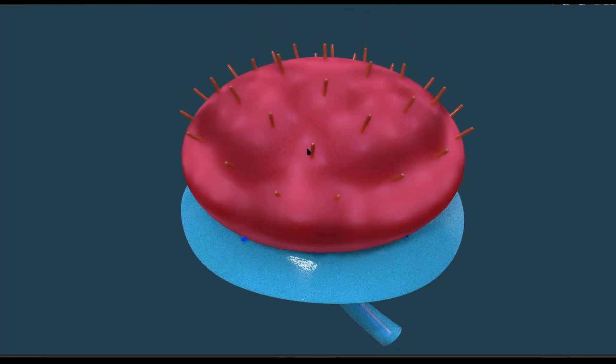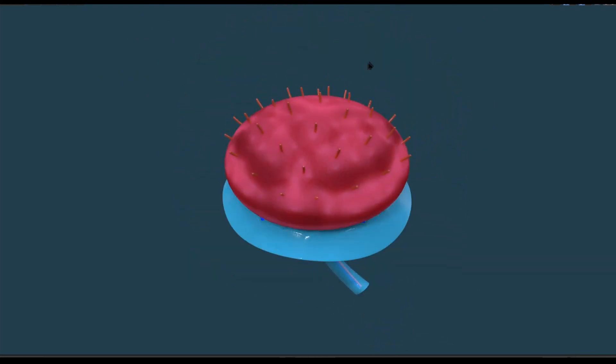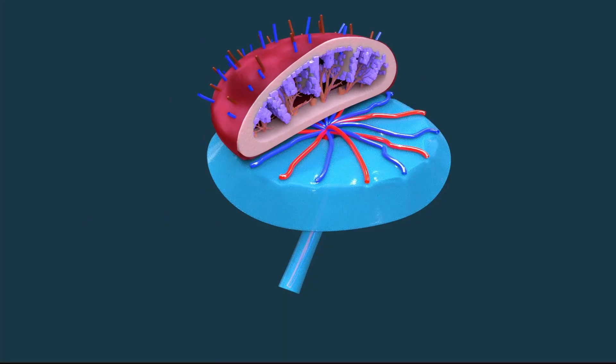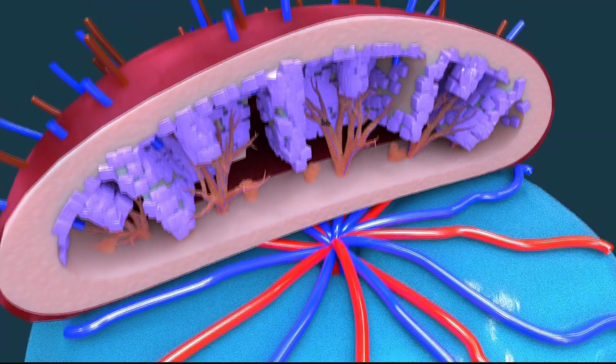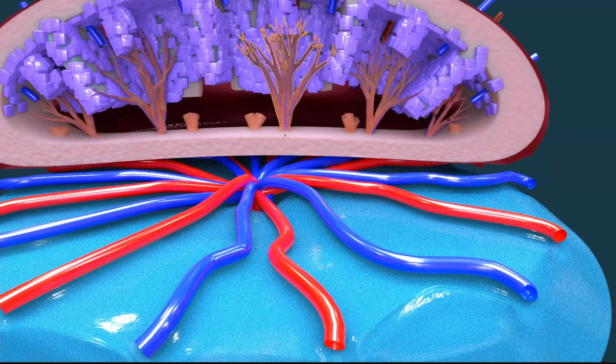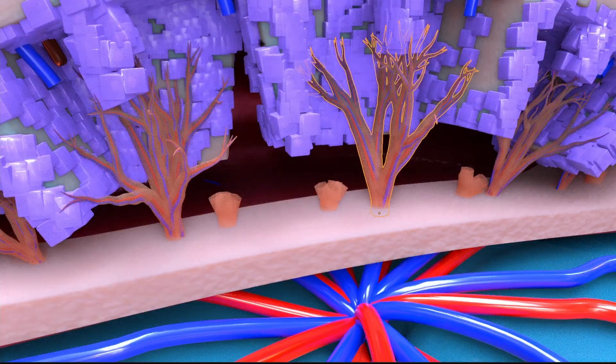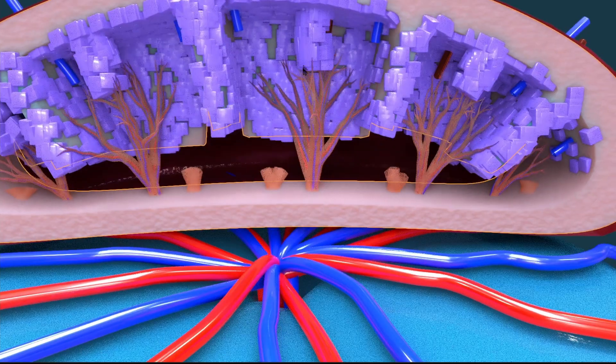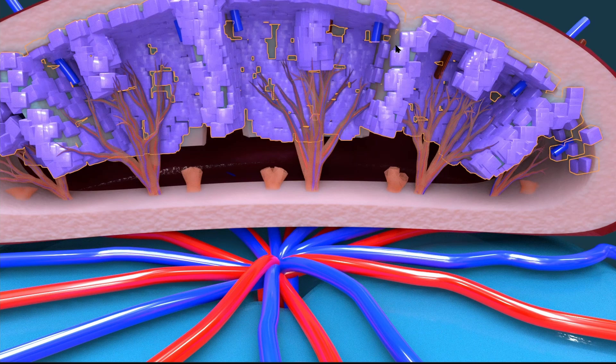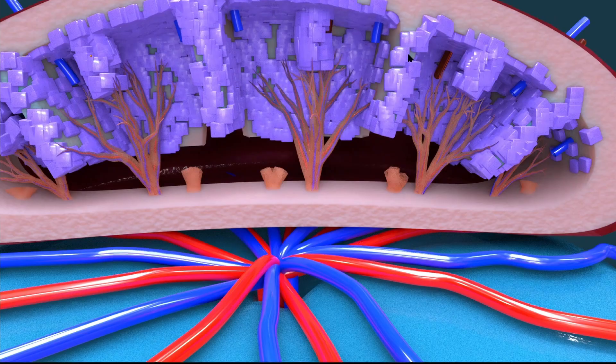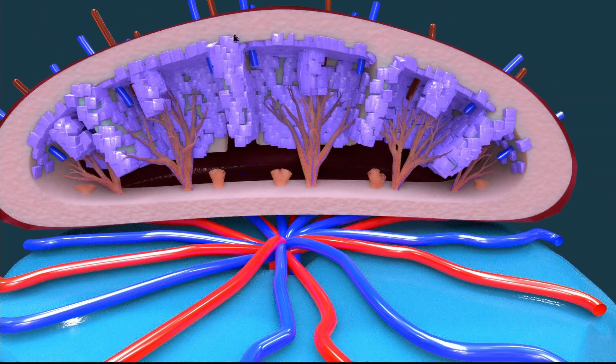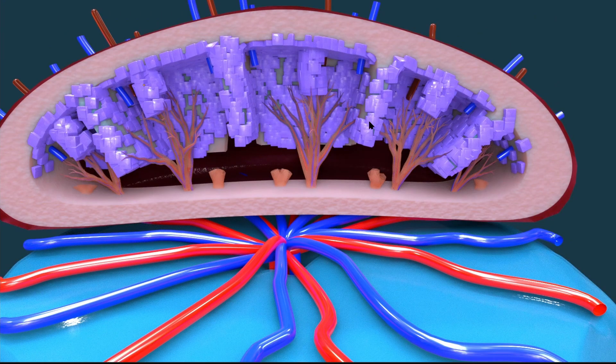Here is the structure of placenta. Now let's cut a section of this placenta from here. Here is the cut section of placenta and what are the structures? Here these are the tertiary villi and these are the placental septa. This part consists of cytotrophoblast cells and is called cytotrophoblastic shell. These placental septa divide the placenta into 15 to 25 incomplete divisions called cotyledons.